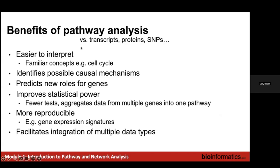To summarize the benefits of pathway analysis versus analyzing individual transcripts, proteins, or SNPs: it's generally easier to interpret because we're working with familiar concepts; it improves statistical power through aggregation and reduction of multiple testing; it identifies possible causal mechanisms. It's also usually more reproducible — differentially expressed genes may not agree across different labs and samples, but the pathways they relate to are more likely to agree. It can also facilitate integrating multiple different data types by doing pathway analysis for each genomic data type separately and combining results at the pathway level.